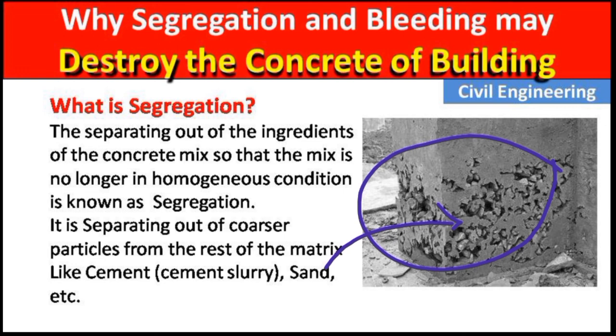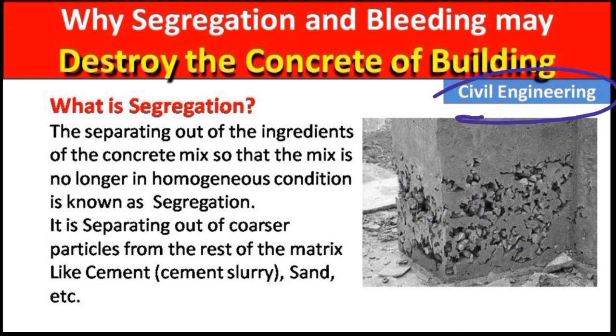So guys, these are the causes of segregation and bleeding and how we can avoid them in concrete. Otherwise, the building may collapse because the lower portion of a column may become weak. Please like this video and subscribe to my channel for new updates. Thank you.